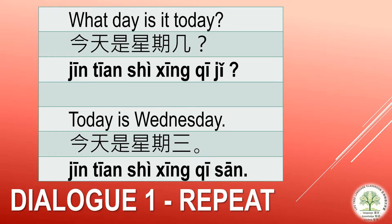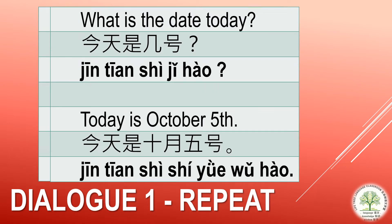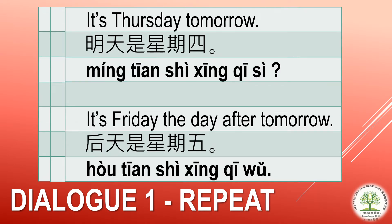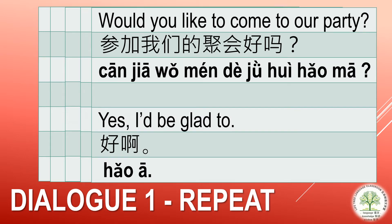Practice: 今天是星期三。 今天是十月五号。 明天是星期四。 后天是星期五。 星期六，你有时间吗？ 我有时间。 参加我们的聚会好吗？ 好啊。